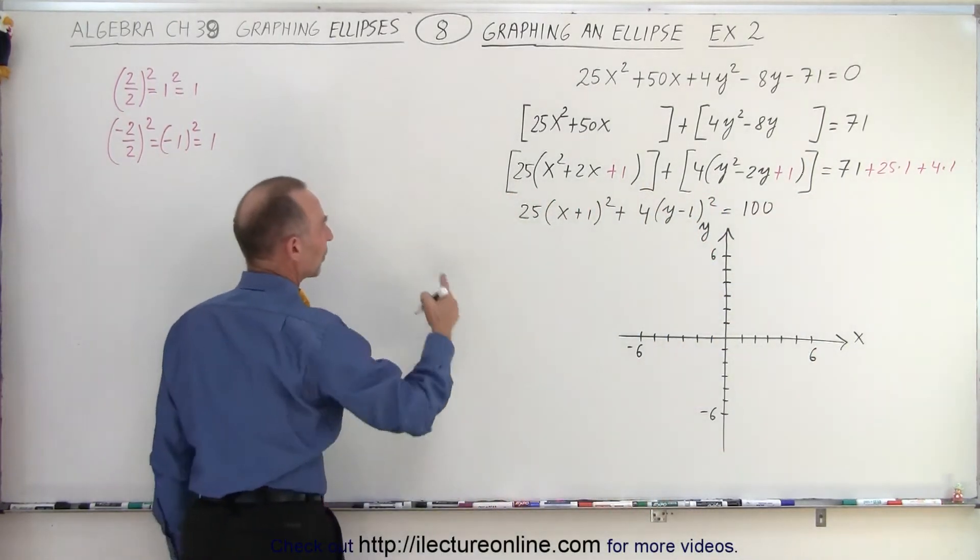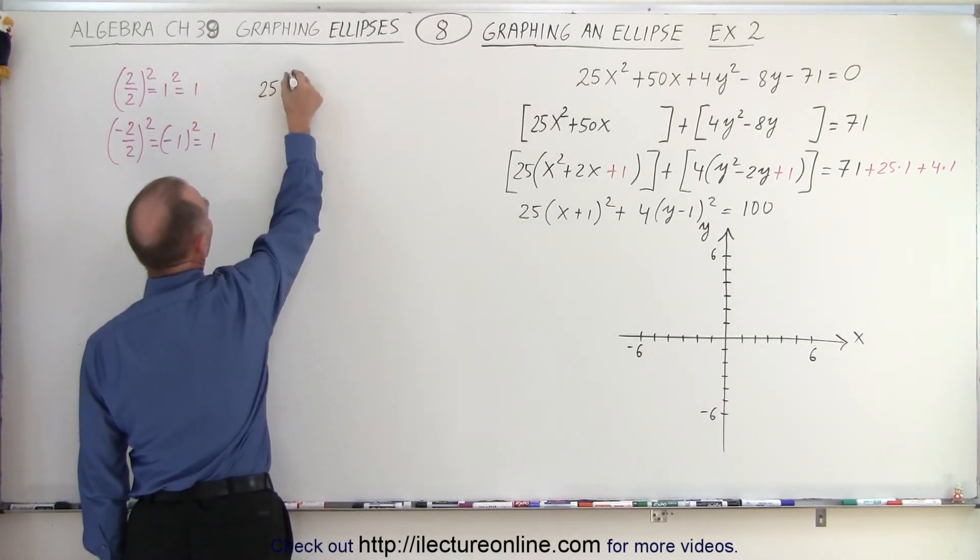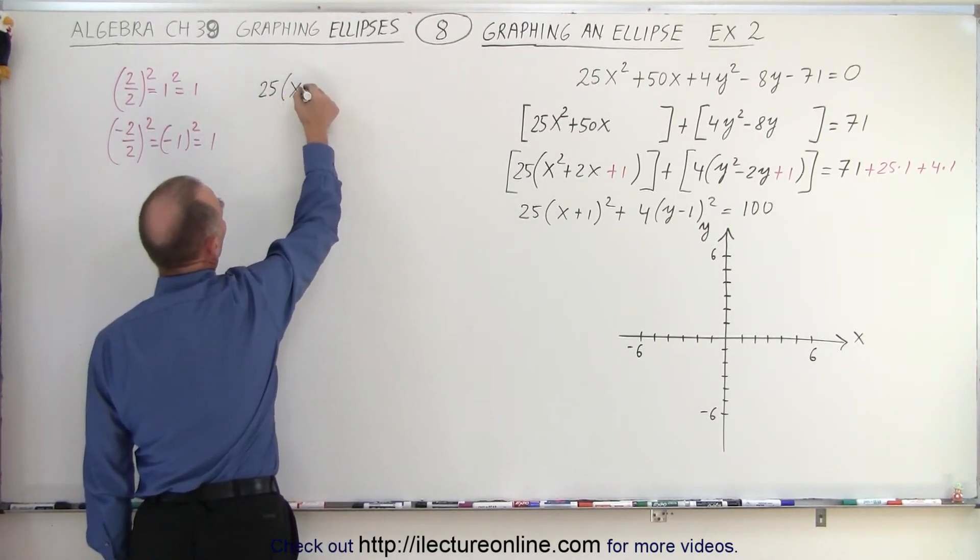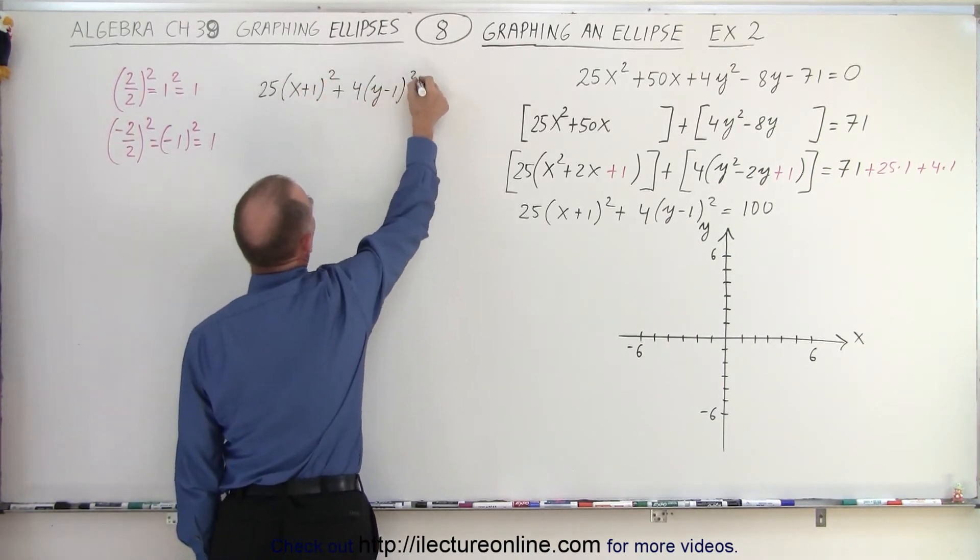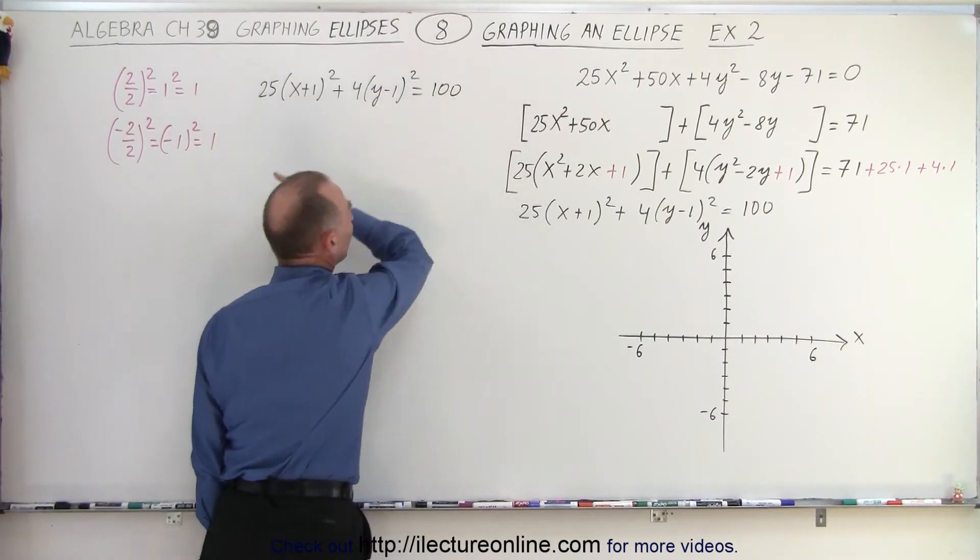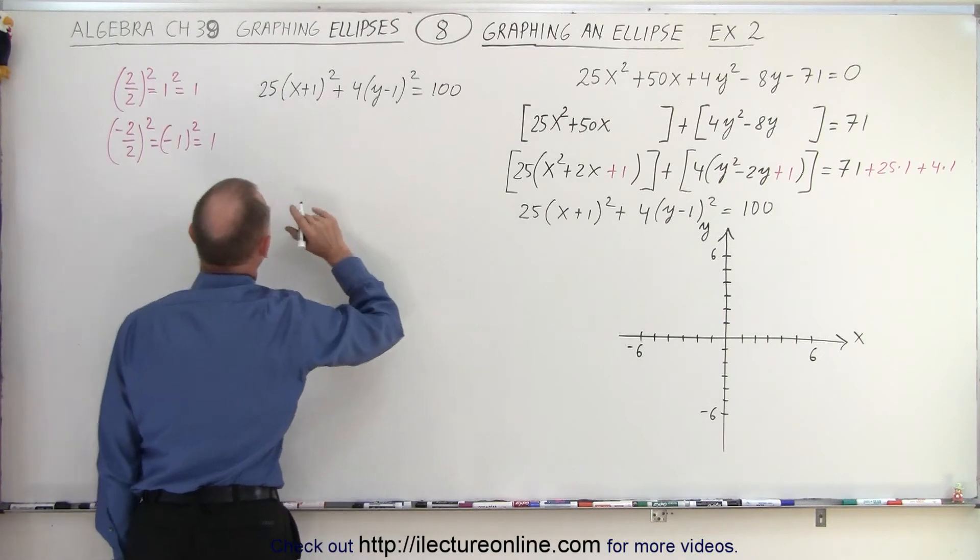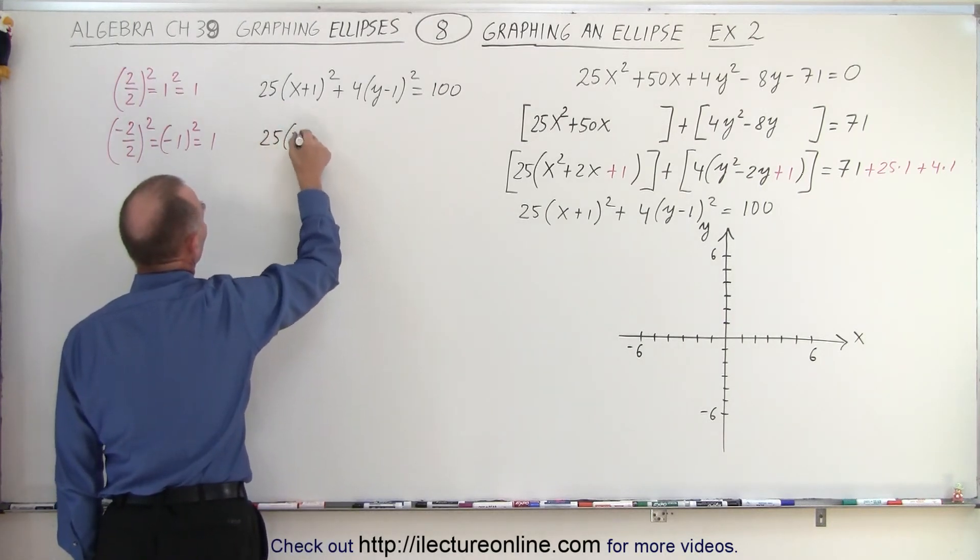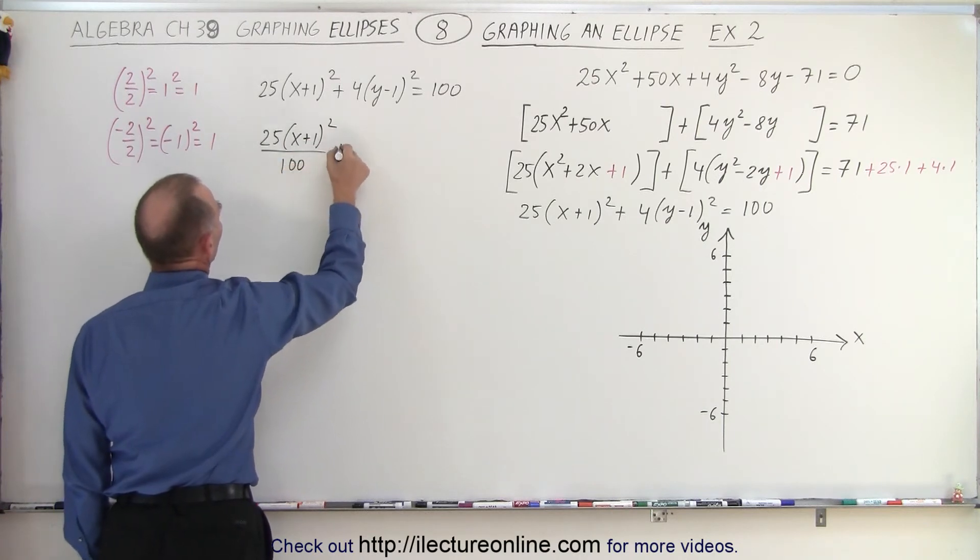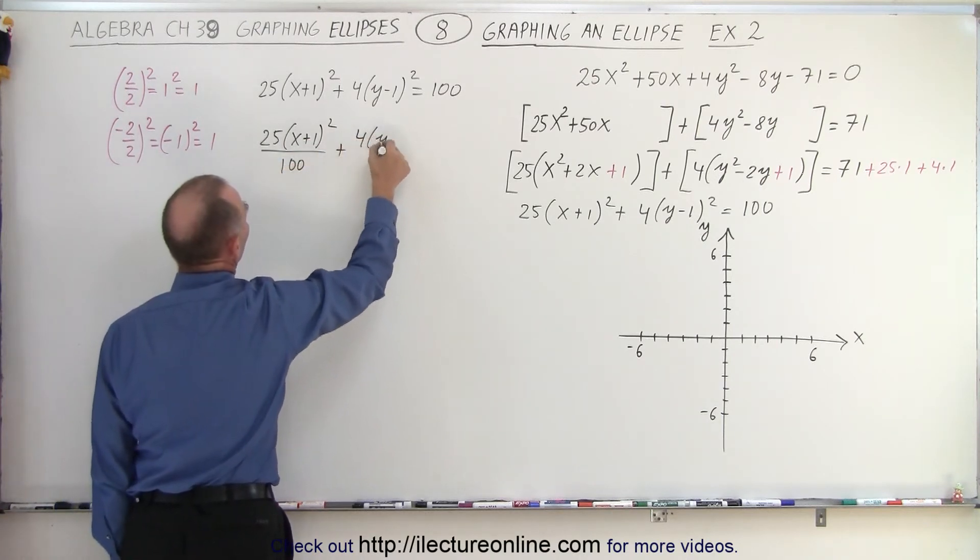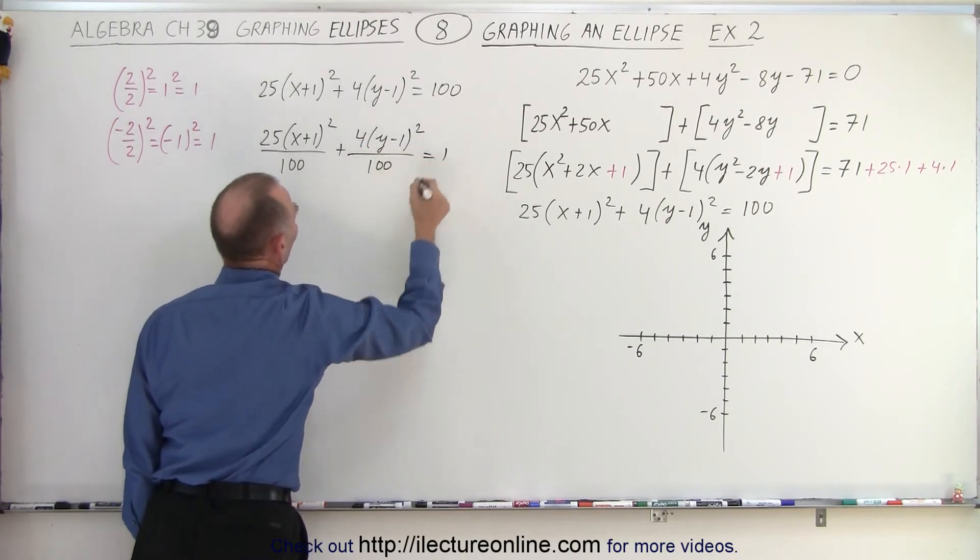Okay, so let's continue. We have 25(x + 1)² + 4(y - 1)² = 100. Now we're going to divide both sides by 100 because we want a 1 on the right side. So we have 25(x + 1)² divided by 100 plus 4(y - 1)² divided by 100 equals 1.